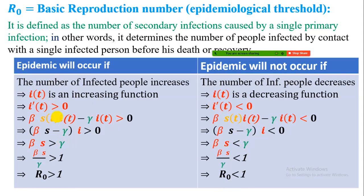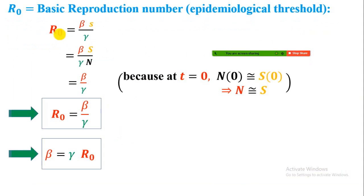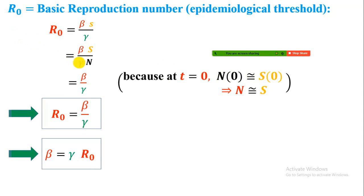R₀ equals βS/γ, which equals β·(S/N)·(N/γ). Writing the definition of small s = S/N, and noting that initially at time t = 0, only a few people are infected and nearly the entire population N is susceptible, we can cancel S with N. Therefore, R₀ = β/γ, or equivalently β = γ·R₀.